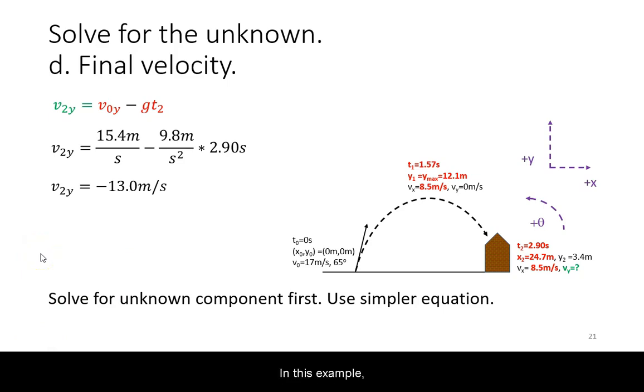In this example, we expect the final vertical velocity to be negative but smaller in magnitude than the initial vertical velocity.